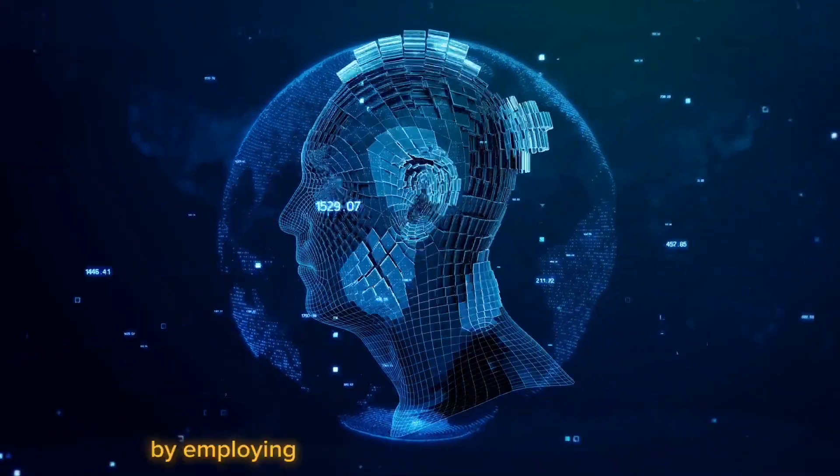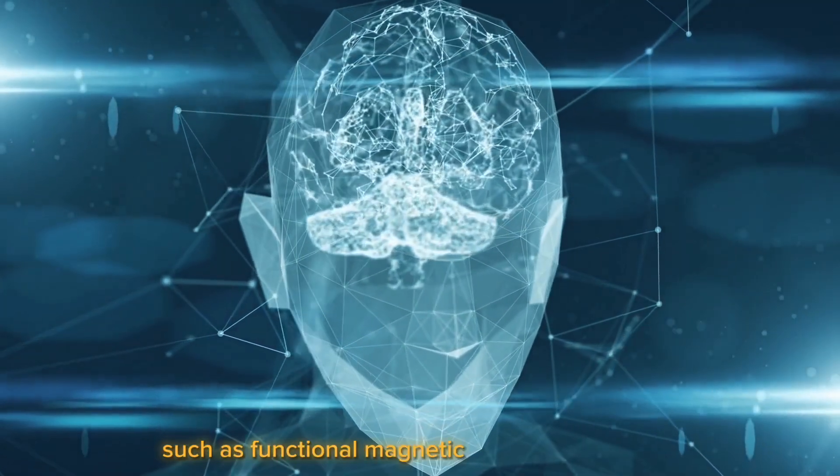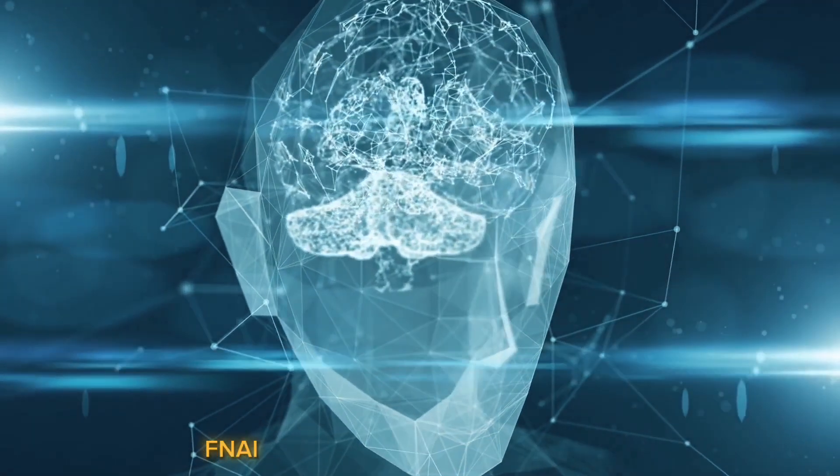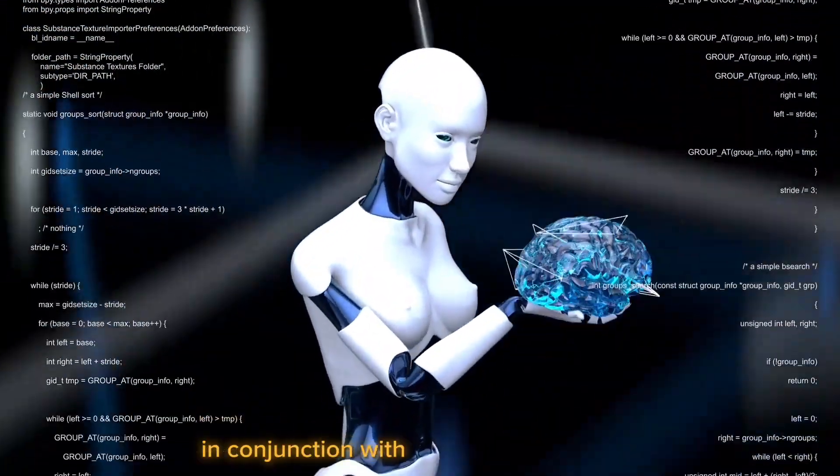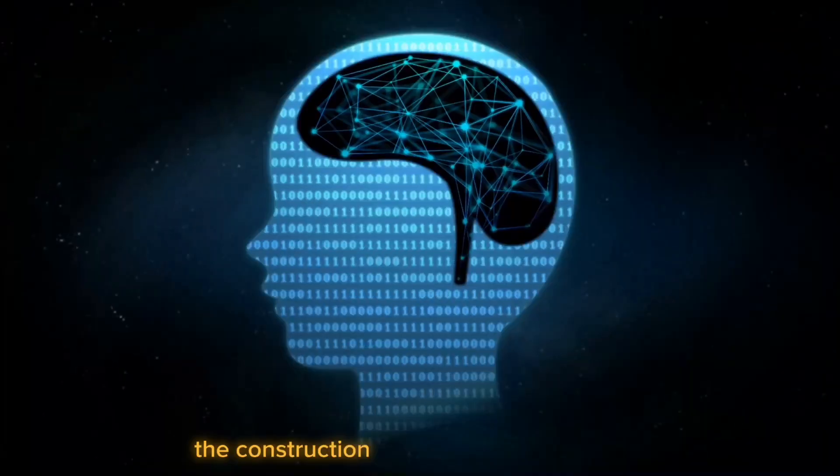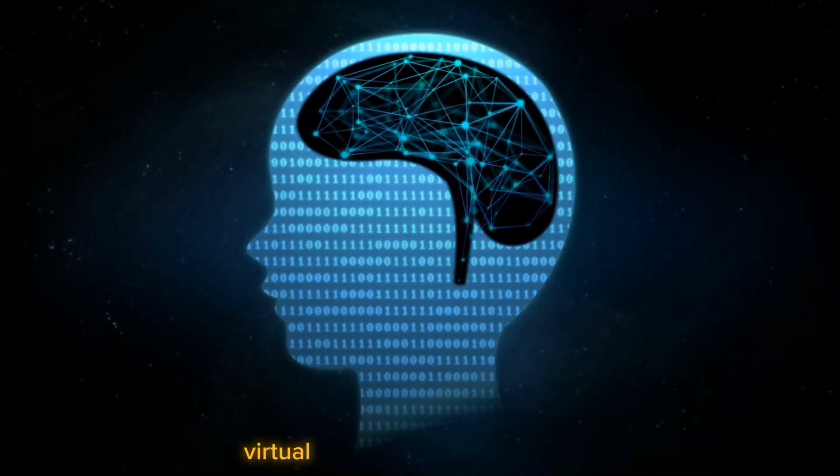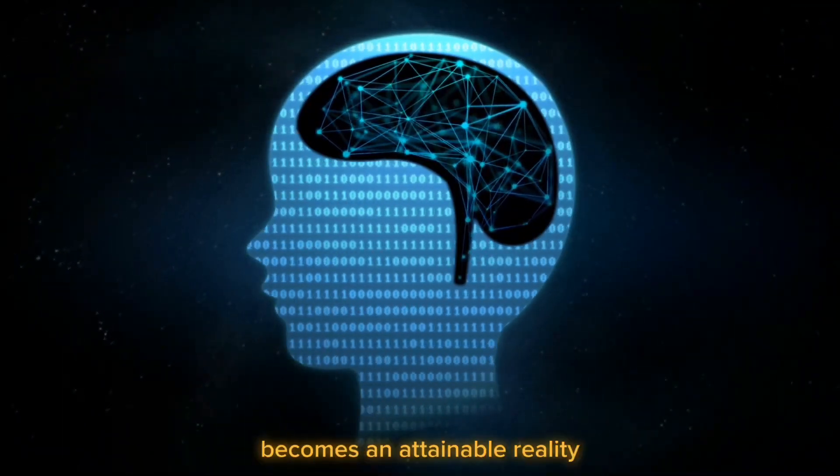By employing advanced brain imaging techniques such as functional magnetic resonance imaging (fMRI) and electroencephalography (EEG), in conjunction with vast amounts of data, the construction of a remarkably accurate virtual model of the human brain becomes an attainable reality.